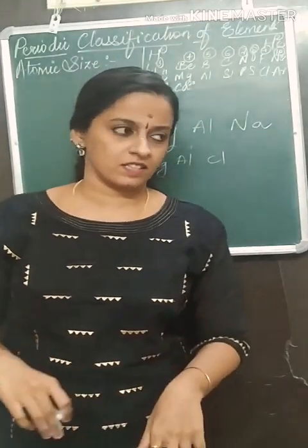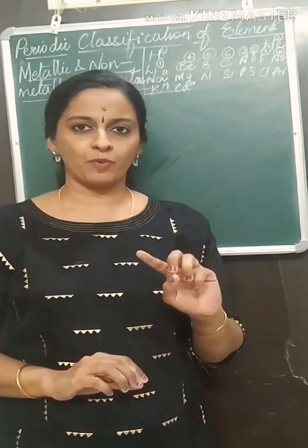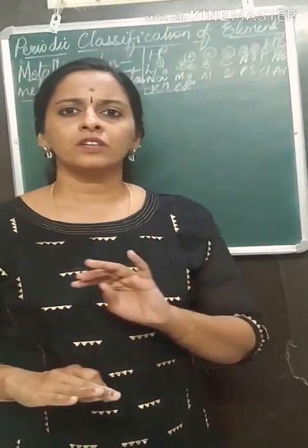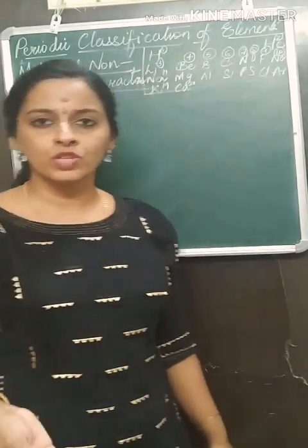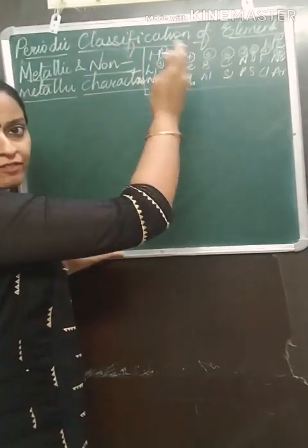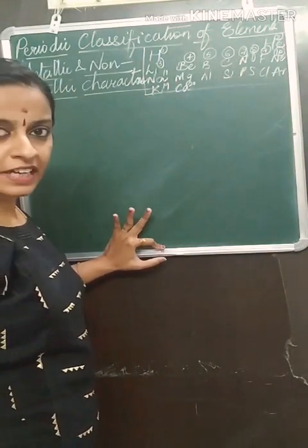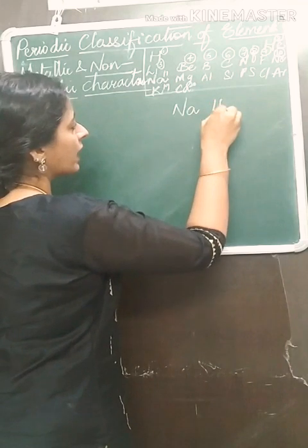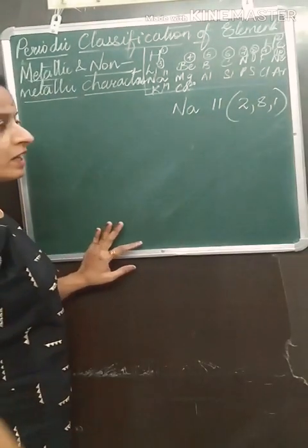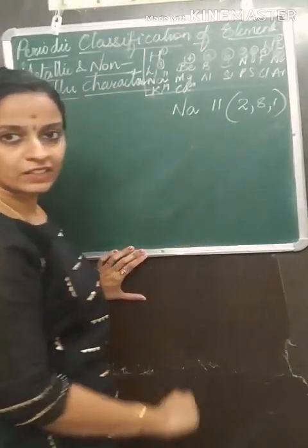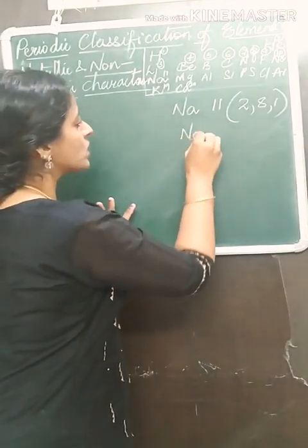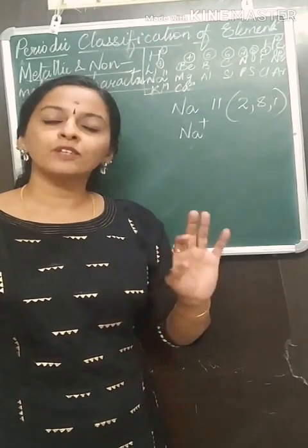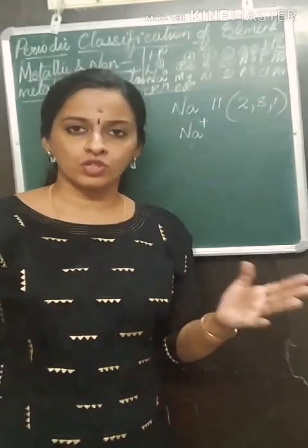This is all about atomic size. Now we come to the last property: metallic and non-metallic character. Metals have the tendency to lose electrons. On the left side of the periodic table we have metals. For example, sodium — atomic number 11, electronic configuration 2, 8, 1 — has the tendency to lose this one electron from the outermost shell and attains a positive ion form, that is a cation. This property of an element to lose electrons is called electropositivity.